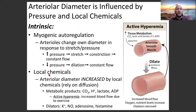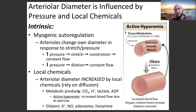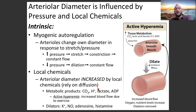Local chemicals also influence arteriolar diameter. Metabolic byproducts cause local arterioles to dilate. If you're doing a lot of bicep curls, you're using a lot of energy in your biceps, producing carbon dioxide, hydrogen ions, lactate, and ADP. Those local chemicals tell the arterioles in the local area to dilate, so more blood comes to that area. When they dilate, they decrease resistance and increase flow. This is called active hyperemia — increased blood flow due to exercise.